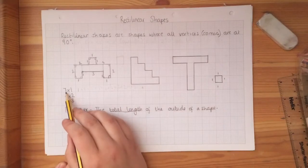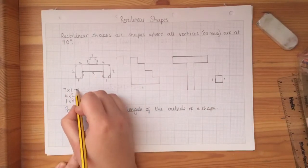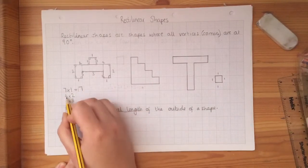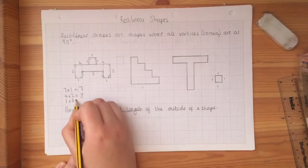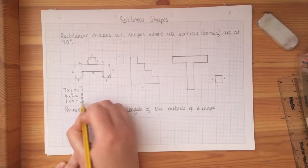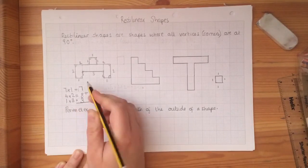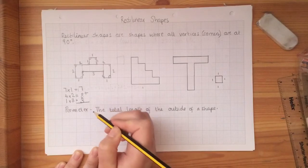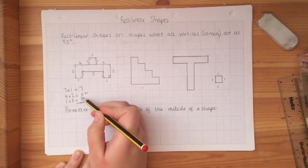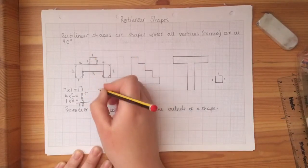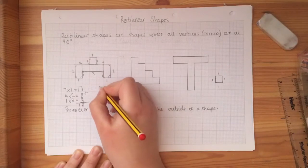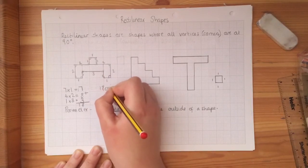So now I need to work out the perimeter. So seven times one is seven, four times two is eight, and one times three is three. All I've got to do now is add these numbers together. So eight add three is 11, 11 add seven is 18. So I know that the perimeter of this shape is 18 centimetres.